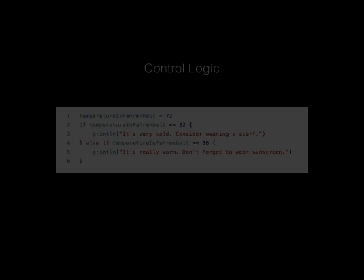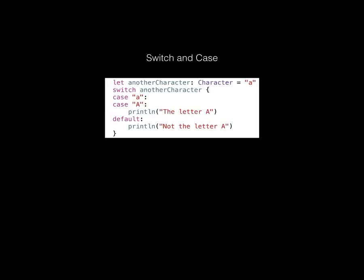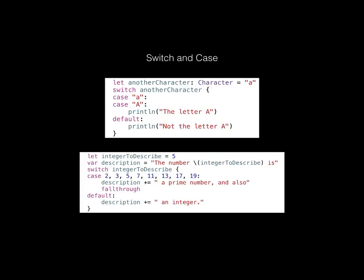Control logic — ifs, do-whiles, and for-loops — are all pretty much the same as you're used to, but the parentheses are no longer required, which reduces the amount of code you write. Switches and cases are very different in one respect: `break` is implied as the default in Swift, so you no longer need to write `break` unless you want to prematurely exit.